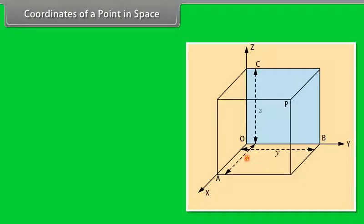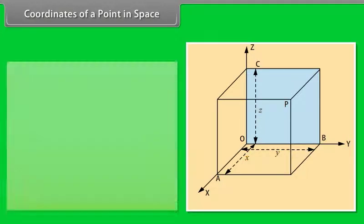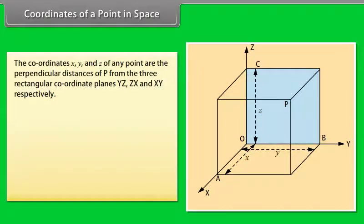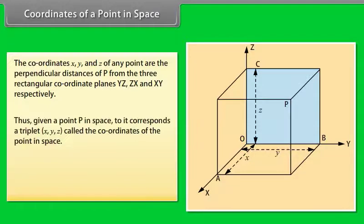The coordinates x, y and z of any point are the perpendicular distances of P from the three rectangular coordinate planes YZ, ZX and XY respectively. Thus, given a point P in space, to it corresponds a triplet (x, y, z) called the coordinates of the point in space.